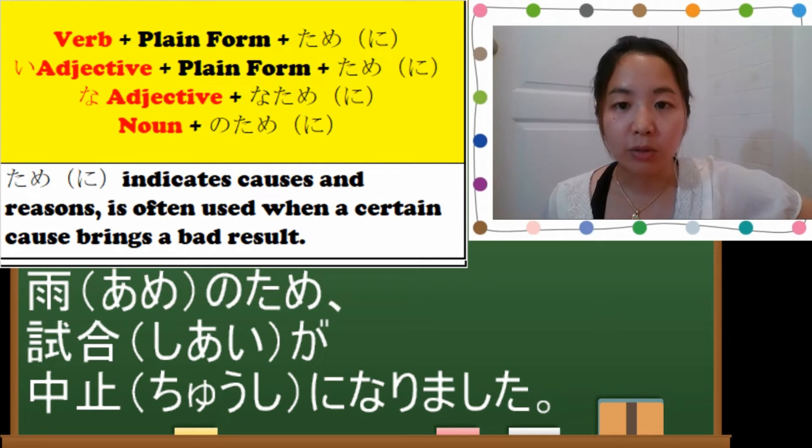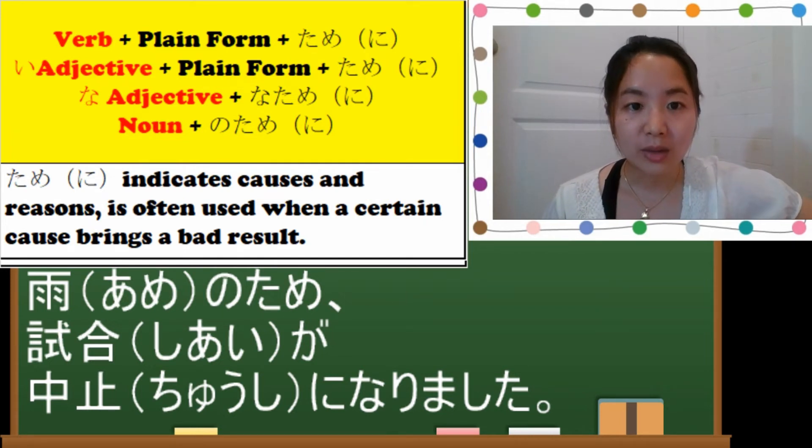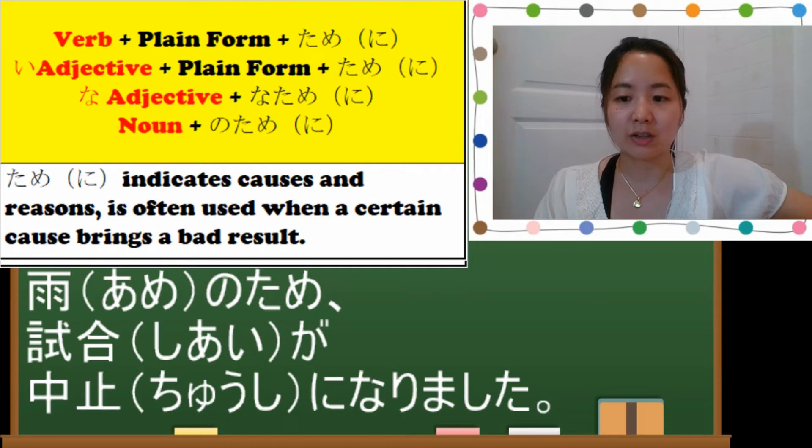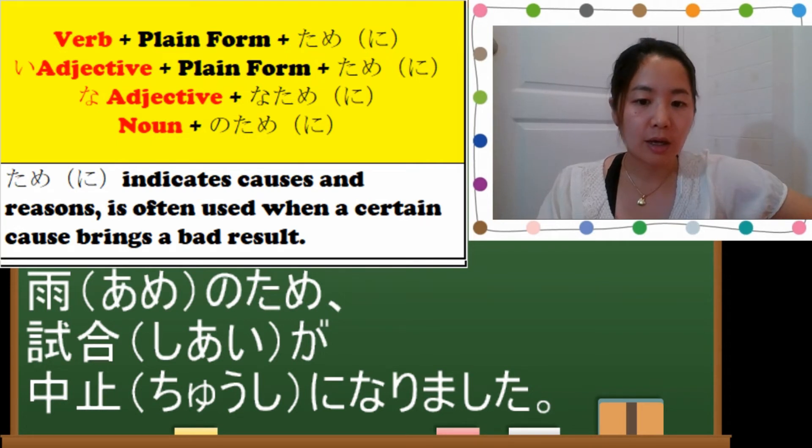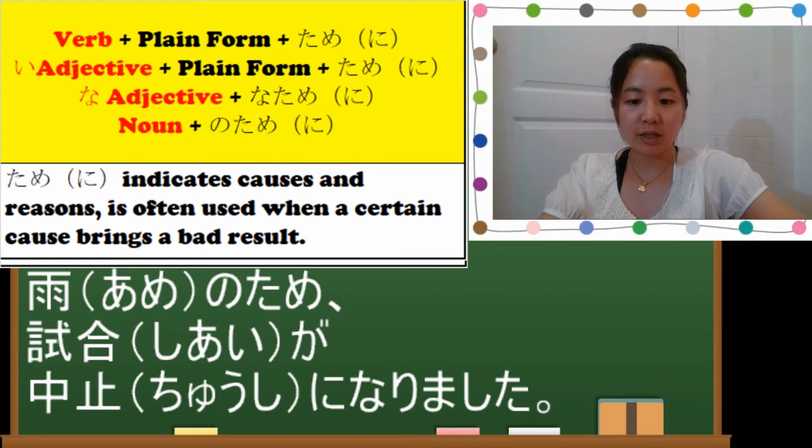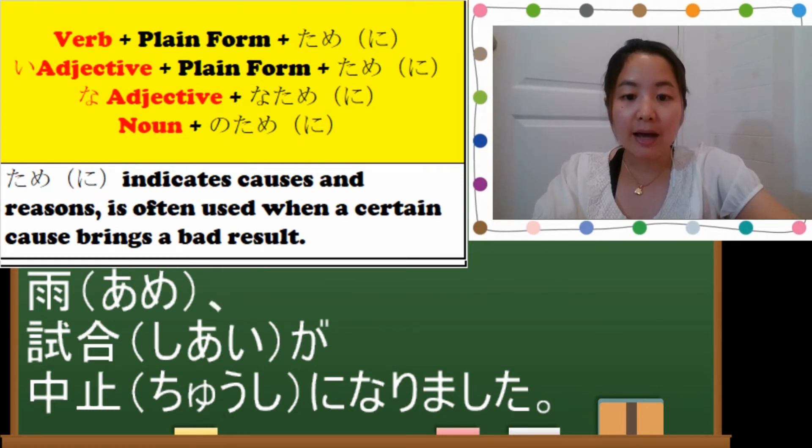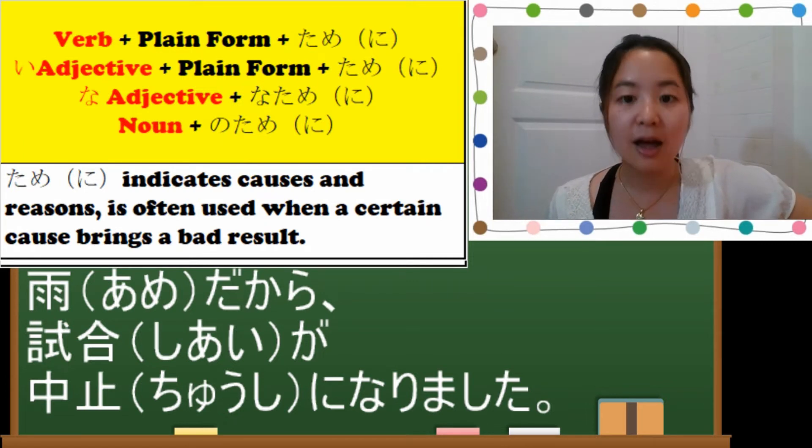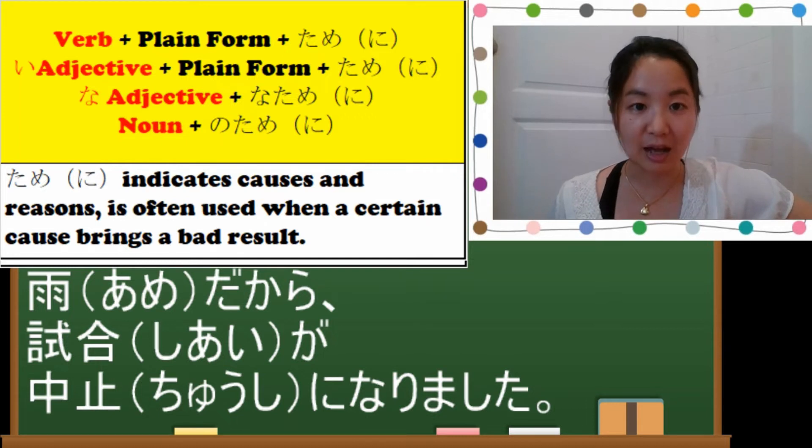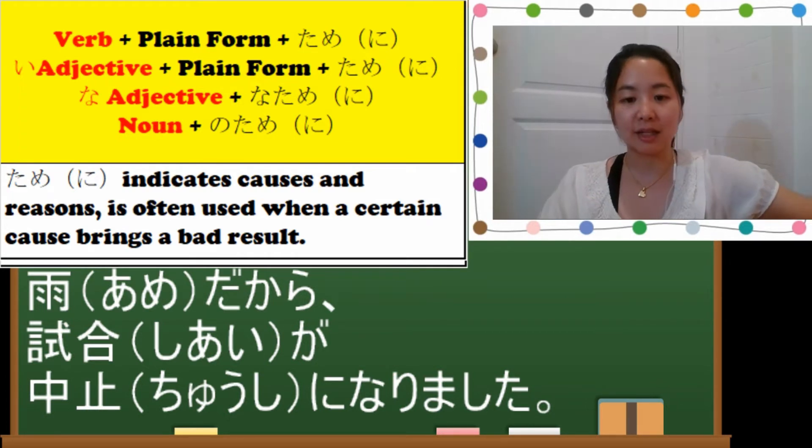So after a noun you put no tame or no tame-ni. So now we are using no tame or tame-ni, but we can also replace with other expressions for reasons and causes. For example, we have learned da kara. So remember in my previous video we have learned kara. Kara also means because. In this case I will say ame da kara shiai ga chuushi ni narimashita. After a noun or na-adjective you put da and then kara.